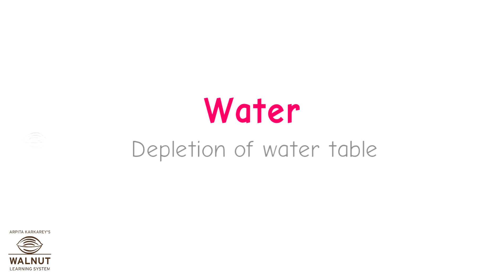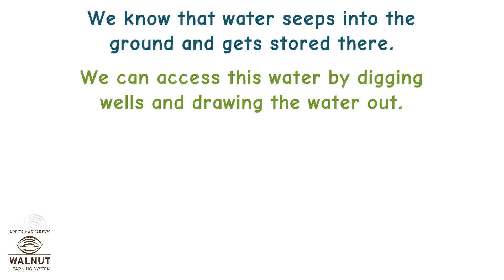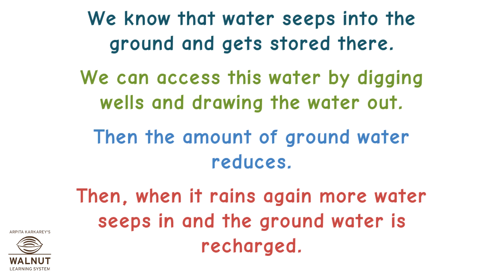Water. Depletion of the water table. We know that water seeps into the ground and gets stored there. We can access this water by digging wells and drawing the water out. Then the amount of groundwater reduces. But when it rains again, more water seeps in and the groundwater is recharged.